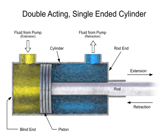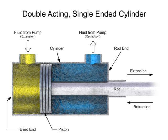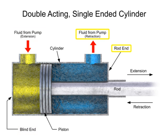A double-acting cylinder is a cylinder in which fluid acts on both sides of the piston. This type of cylinder can produce linear motion in two directions. A double-acting cylinder has two fluid ports, one on the blind end and one on the rod end.